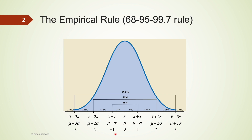The empirical rule says 68 percent of observations are within plus or minus one standard deviation from the mean, meaning their z-scores are between negative one and positive one. That's roughly about two-thirds of observations. The next number is 95 percent.